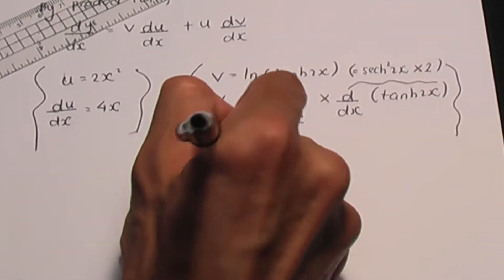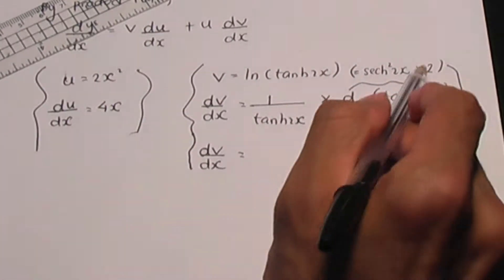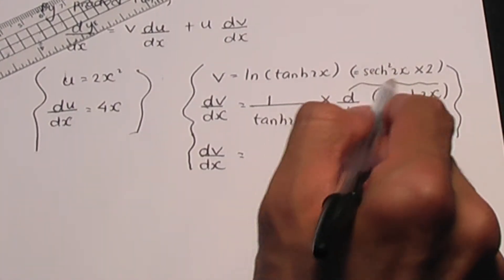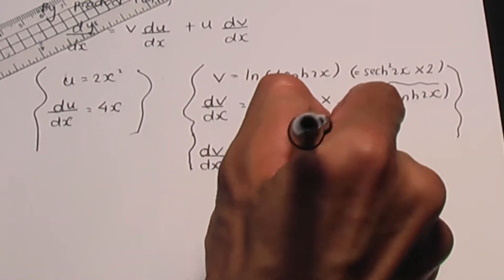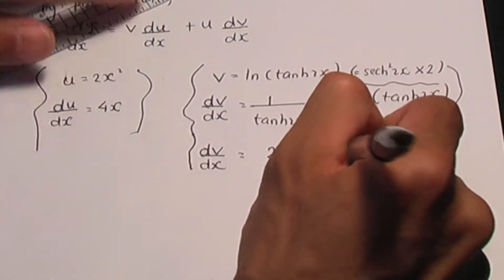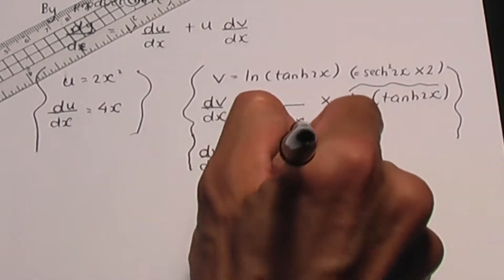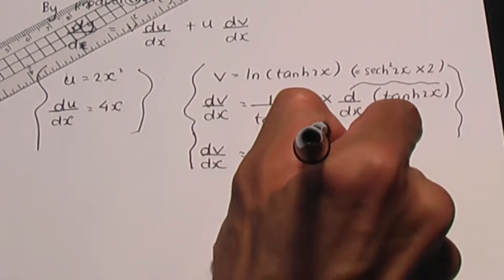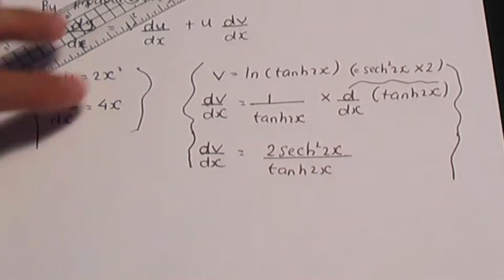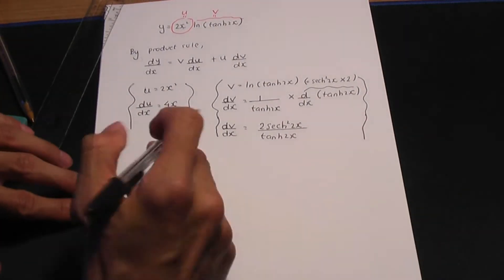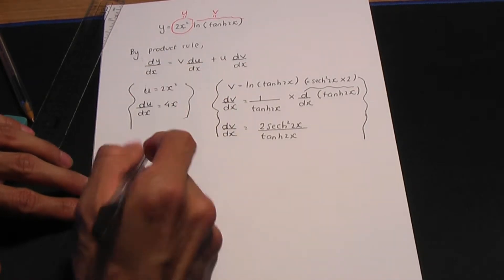So just to continue, dv over dx. If we simplify, 2 times hyperbolic sec squared 2x times 1 is 2 hyperbolic sec squared 2x divided by, not forgetting, the hyperbolic tan 2x. So this is dv over dx. If I replace our side calculation results into the product rule itself...